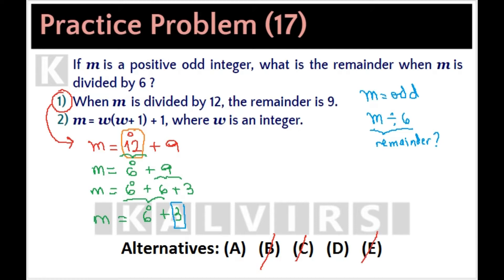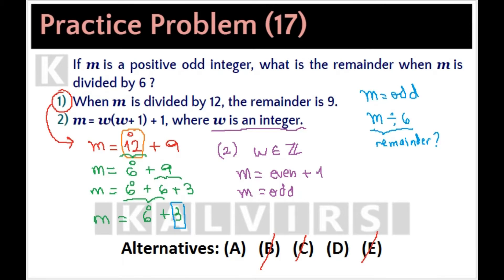From statement 2 alone: M equals W times (W plus 1) plus 1, where W is an integer. The product of two consecutive integers is always even. Therefore, M is an even number plus 1, which means M is odd. But remember that the question stem already states that M is an odd integer, so this information does not help us find the remainder. Statement 2 alone is not sufficient.